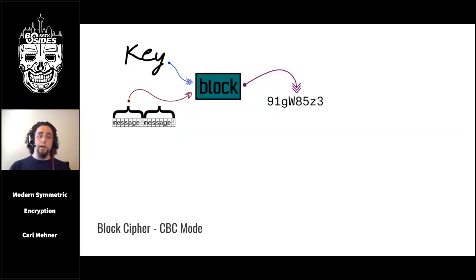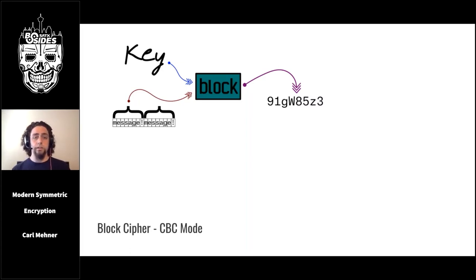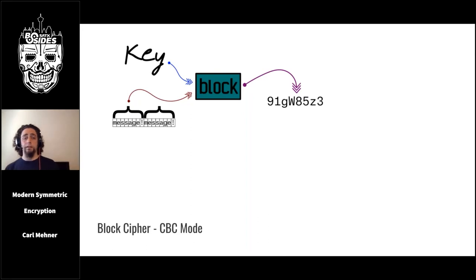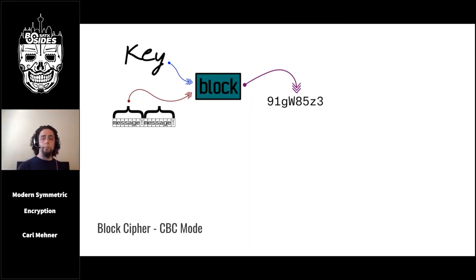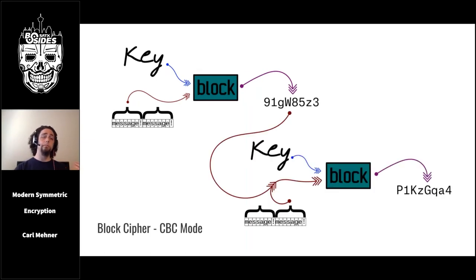Microsoft's .NET API has a different default that's a bit safer — Cipher Block Chaining mode, or CBC mode, a concept developed back in 1976. This mode prevents the penguin problem by taking the ciphertext output from the previous block and XORing it with the input to the next block.